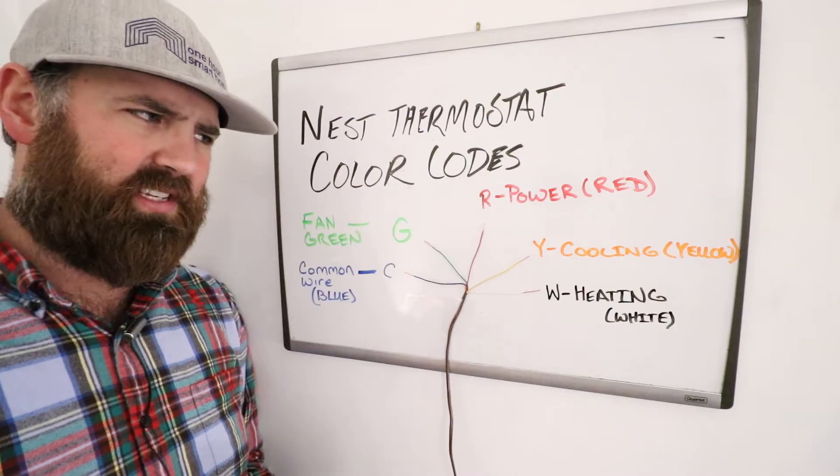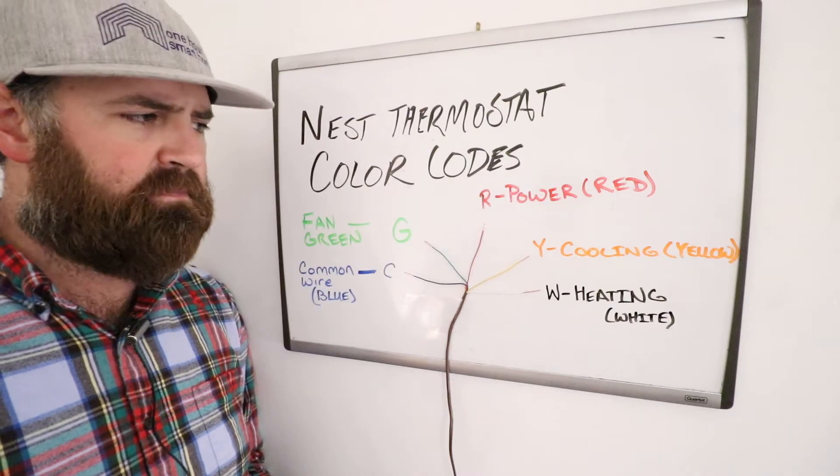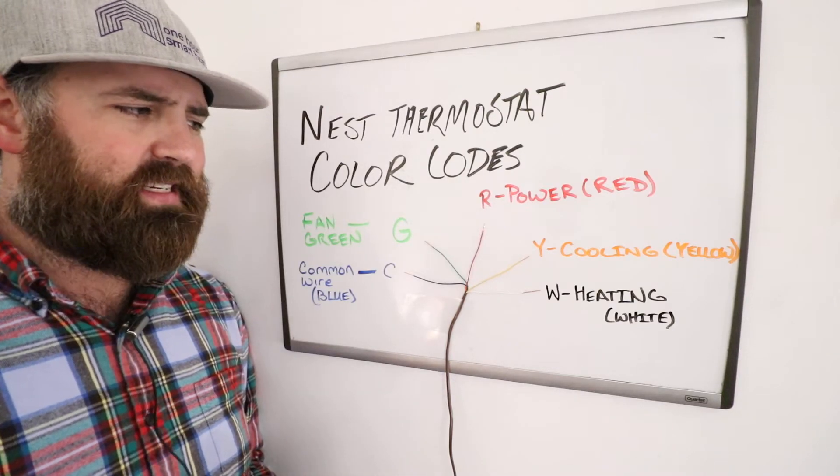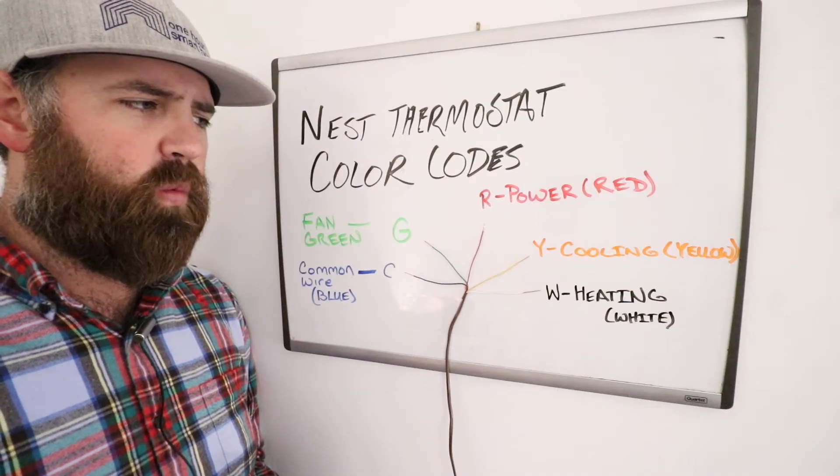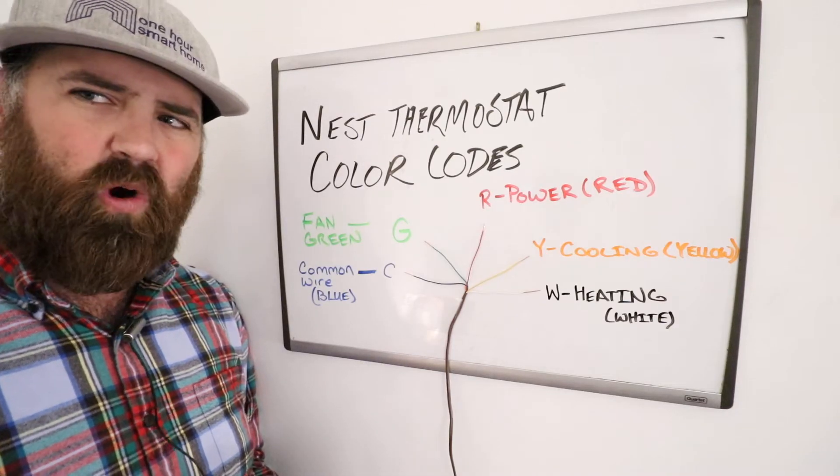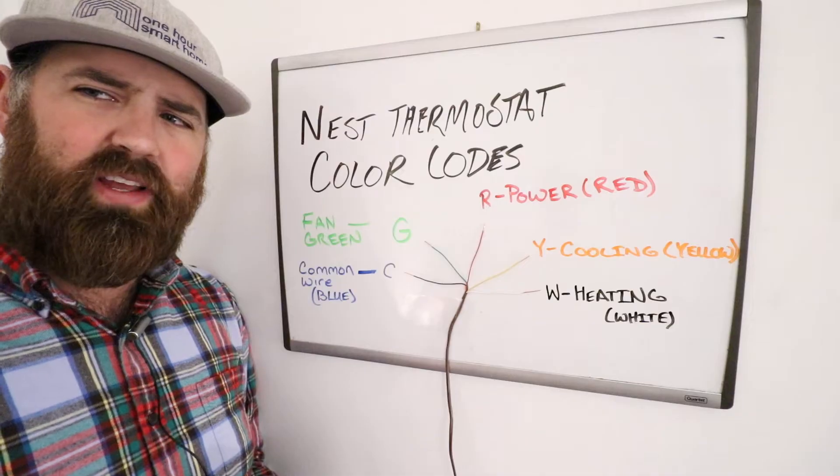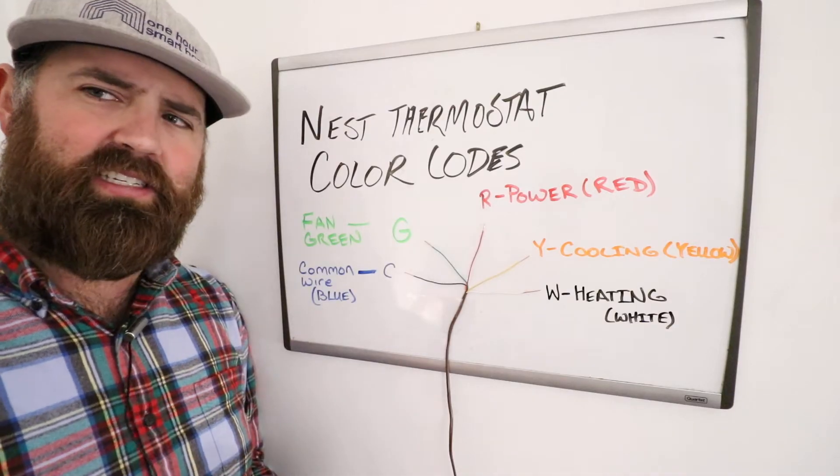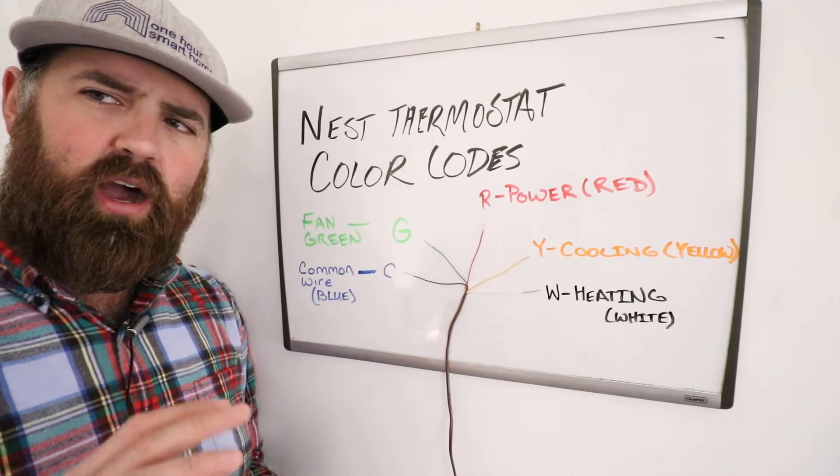The Y-Wire is yellow, and that is the cooling wire or AC wire. So that controls your HVAC system on the AC side. So your air conditioning, your compressor, and everything that works with cooling your home.